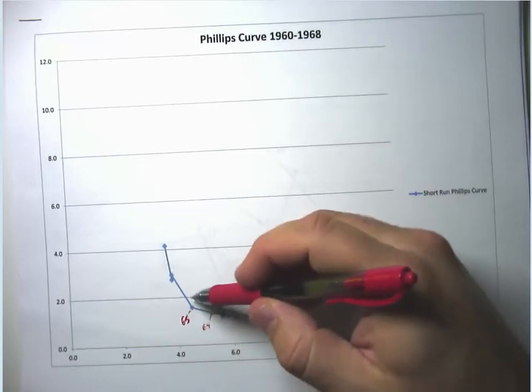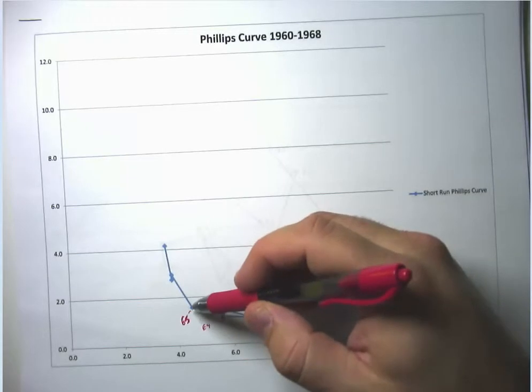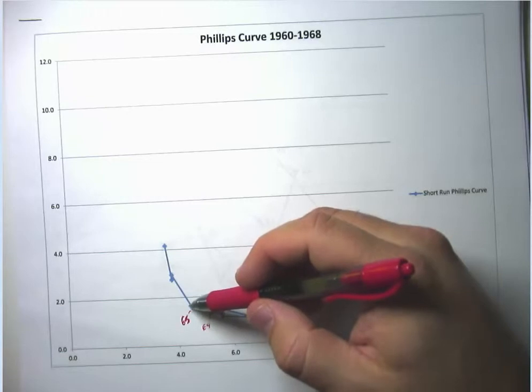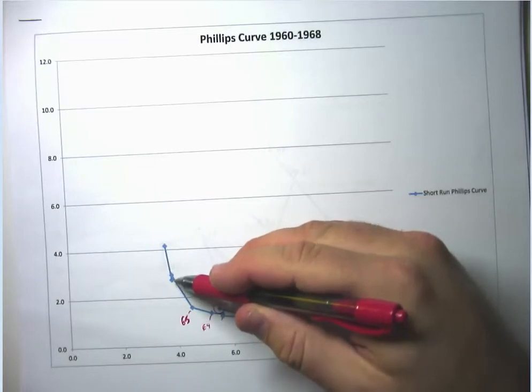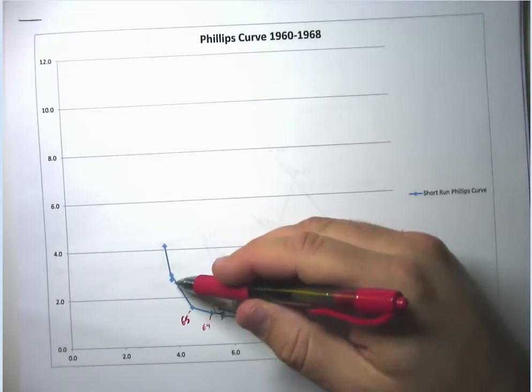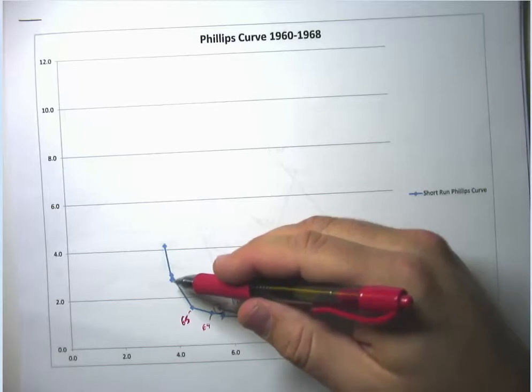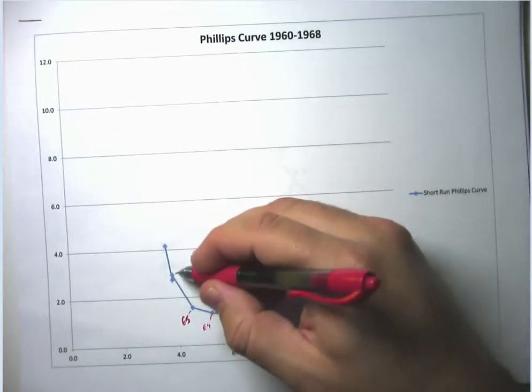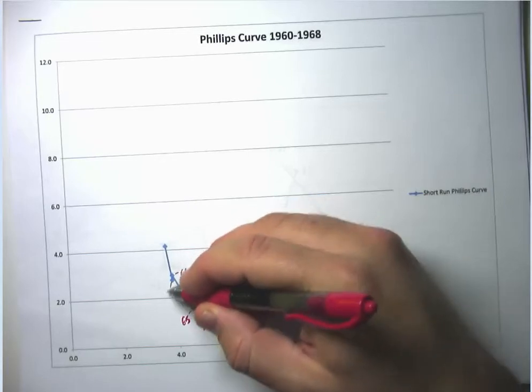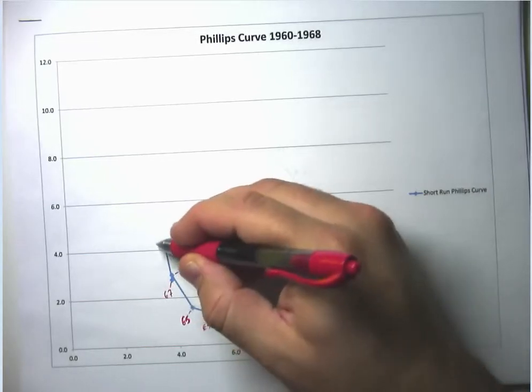Also to some degree, the government is increasing its spending on the war on poverty and that sort of thing. And to sort of be a good supporter of both of those initiatives, the Federal Reserve keeps interest rates nice and low, which is what it had historically done in previous major wars, like World War II. So then we go up here to 66, 67, and 68.